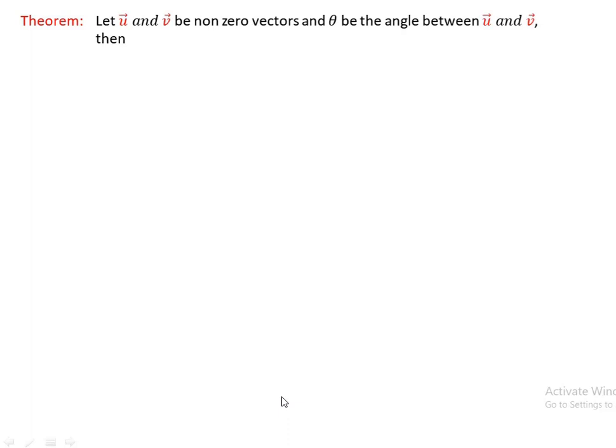Let u and v be non-zero vectors and let theta be the angle between u and v. Then the norm of u cross v equals the norm of u times the norm of v times sine theta.